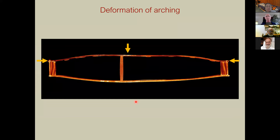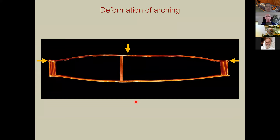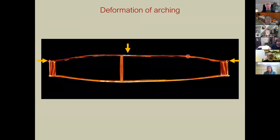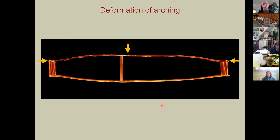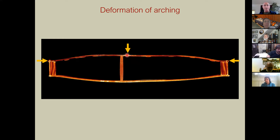Most of us are familiar with deformation as a distortion of the arching that happens over time. My first experience was copying old instruments — you have to decide how much of that distortion you want to incorporate. One of the instruments that alerted me to creep was an early copy of a Strad that had a lot of the original geometry, and unfortunately that original geometry tends to continue in the direction it's being stressed.